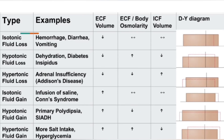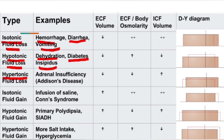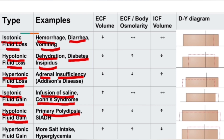We also discussed the clinical examples: isotonic fluid loss is seen in hemorrhage, diarrhea, and vomiting. Hypertonic fluid loss is seen in dehydration and diabetes insipidus. Hypotonic fluid loss is seen in adrenal insufficiency, which involves a decrease in aldosterone. Isotonic fluid gain occurs with saline infusion or Conn's syndrome. Hypotonic fluid gain is seen in primary polydipsia or SIADH. Hypertonic fluid gain is seen with excess salt intake or hyperglycemia.